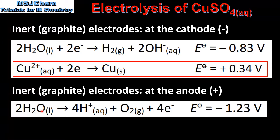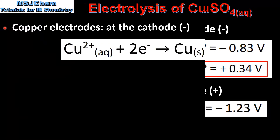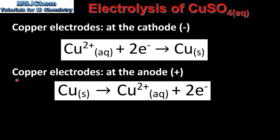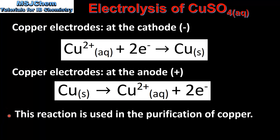At the anode we'll have the oxidation of water to form oxygen gas. Finally, we have the electrolysis of copper sulfate solution using copper electrodes. At the cathode we'll have the reduction of copper(II) ions to form copper metal, and at the anode we'll have the oxidation of copper metal to form copper(II) ions. This reaction is used in the purification of copper.